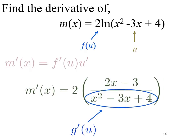Taking the derivative, f prime of u would be 1 over x squared minus 3x plus 4 — that's how you take the derivative of natural logs. Then the derivative of the inside function, x squared minus 3x plus 4, is 2x minus 3. That's u prime. And then of course we have the 2 in front, and we have the derivative.